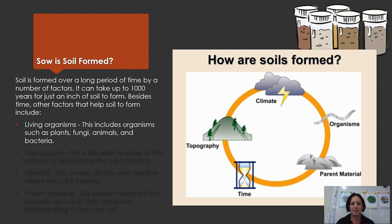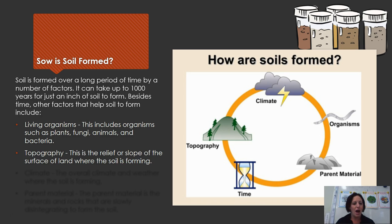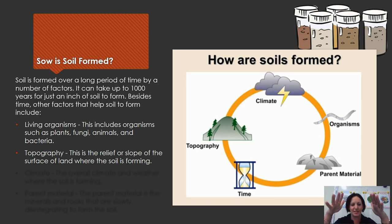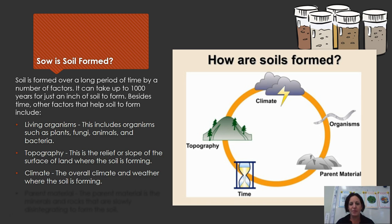Living organisms help the soil to form as well. Topography — meaning the slant of a mountain or the area where it is — also matters. The more slanted it is, the more prone it is to erosion or weathering, which can affect how fast or slow soil forms there. Climate is another factor: lots of rain or wind will break down rock, which in turn makes soil.